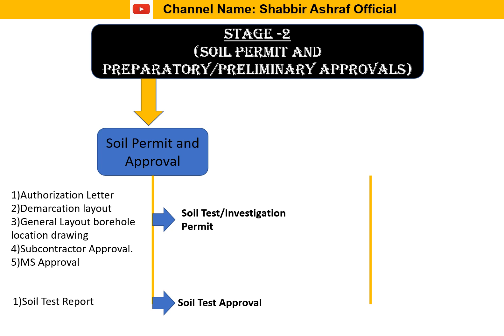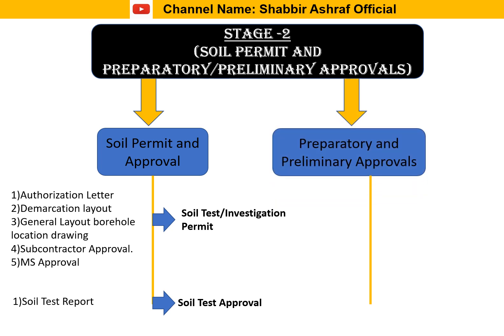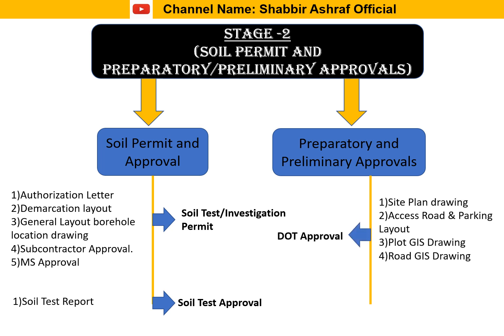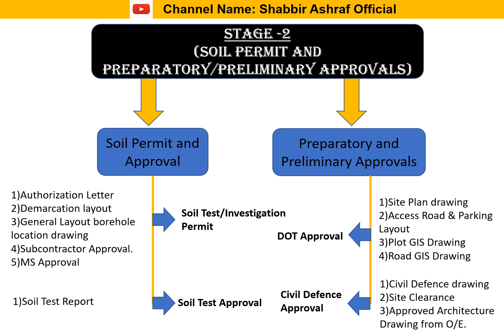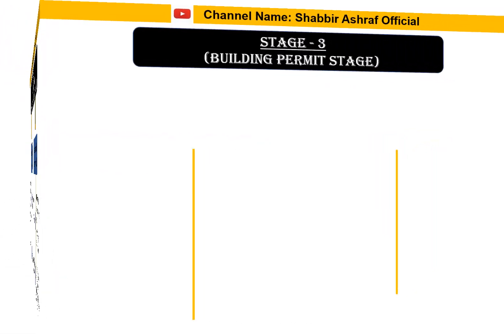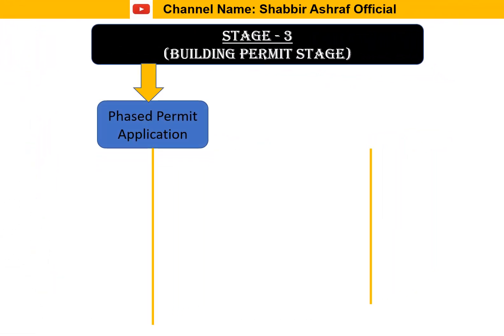After receiving the soil test report, we upload it to the municipality portal for approval. The soil test reveals the foundation type, groundwater level, and whether piling is required. We then proceed to DOT approvals, which require a site plan drawing, access road and parking layout drawing, GIS road drawing for the plot location. Following DOT approval, we apply for civil defense approval, which requires civil defense drawings, site clearance, and approved architecture drawings from the owner's engineers.